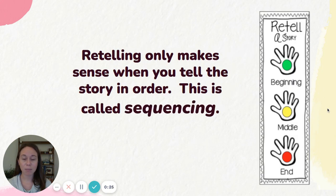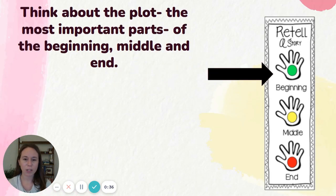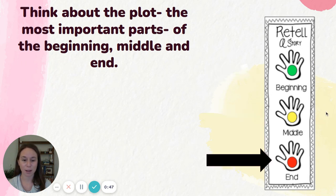Now something important to learn today is that retelling only makes sense when you tell the story in order. This is called sequencing. When we do sequencing, or when we retell a story in order, we think about the most important parts of the beginning, the middle, and the end. We have to think about what happens in the beginning, in the middle, and the end in order to properly retell our story.